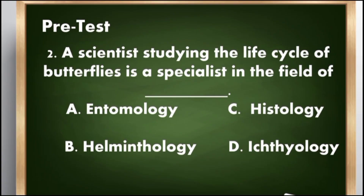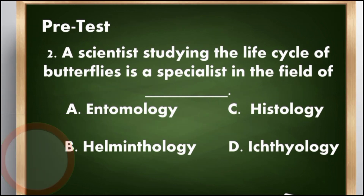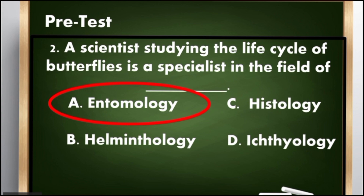Number 2: A scientist studying the life cycle of butterflies is a specialist in the field of ___. A. Entomology, B. Helminthology, C. Histology, D. Ichthyology. The correct answer is letter A, entomology.